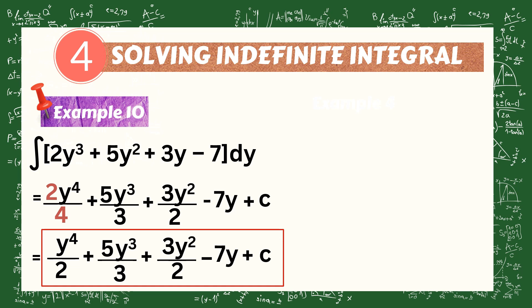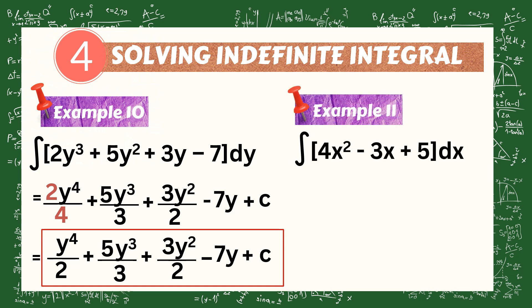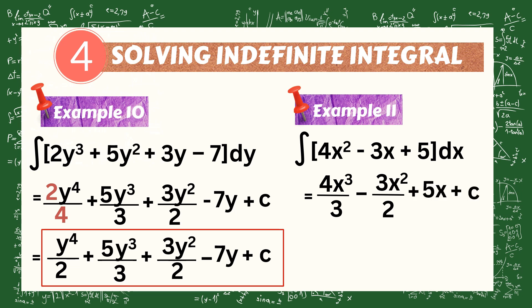Simplifying further: 2y to the 4th over 4 reduces, giving us y to the 4th over 2, plus 5y cubed over 3, plus 3y squared over 2, minus 7y plus C. This is the final answer. Another example: evaluate the integral of the quantity 4x squared minus 3x plus 5 dx. Integrating each term: 4x to the cube over 3, minus 3x squared over 2, plus 5x, plus C.